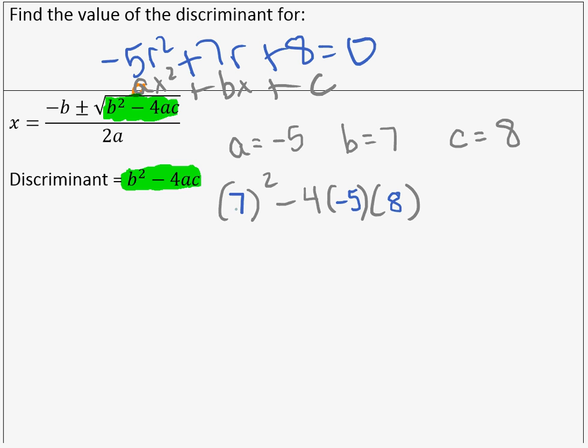So now let's multiply. 7 squared, that's 49. We have this negative 4. I like to think of this as the negative sign is with this 4. So negative 4 times negative 5 is positive 20, times 8 is 160. And that's a positive 160. So I get 49 plus 160.